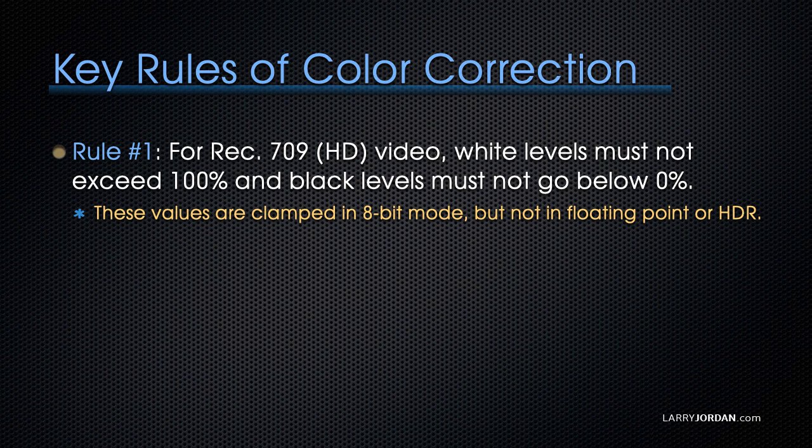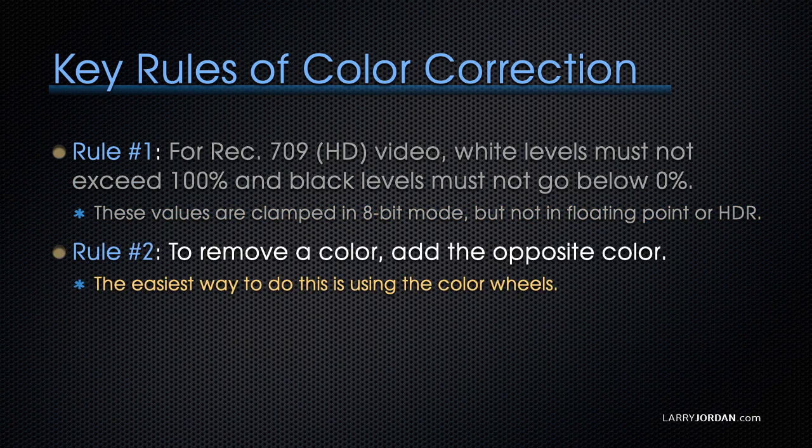There are three key rules of color correction. Rule 1: for Rec. 709 HD video, white levels must not exceed 100% and black levels must not go below zero, for everything except the web. These values are clamped in 8-bit mode, but not in floating mode or HDR, which is why I like to drive my scopes in floating mode. Rule 2 is to remove a color, add the opposite color, which is the reason I use color wheels.